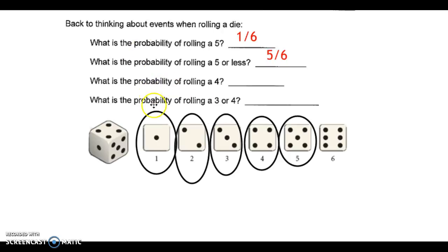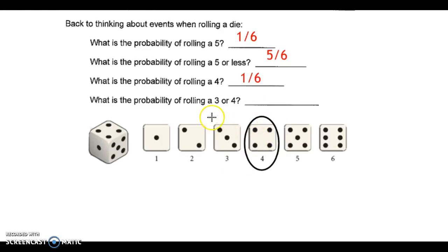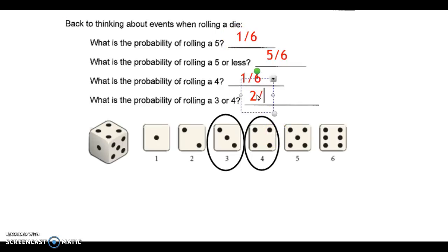The probability of rolling a four — there is one desired outcome, so that is one out of six. The probability of rolling a three or a four gives us two desired outcomes divided by six possible outcomes, so two divided by six.